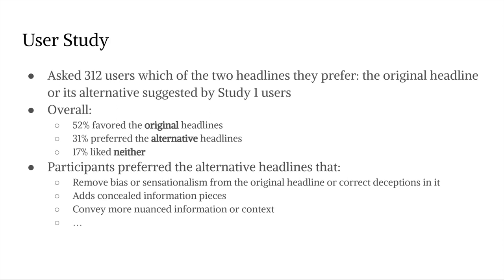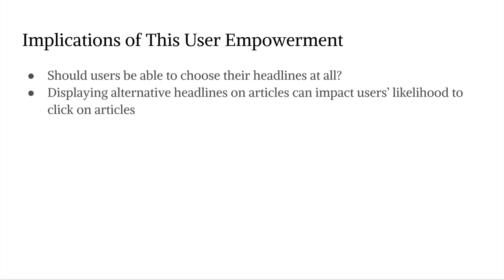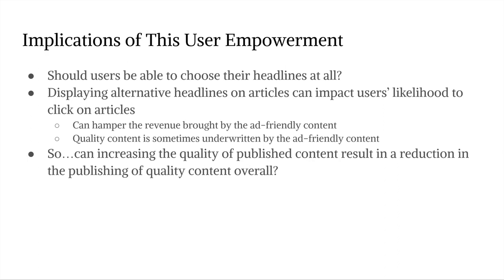In our paper, we discussed insights on the potentials and challenges of the user empowerment that our tool can bring about. For example, we talked about whether users should be able to choose their headlines at all. One issue is that displaying alternative headlines can impact users' likelihood to click on articles, which can hamper the ad revenue that clickbait headlines bring into the journalism industry. The quality content published in news media is sometimes paid for by the ad-friendly content. So if we attempt to remove clickbait headlines, we might end up jeopardizing the publishing of quality content. A serious question is whether increasing headline quality through tools like Re-Headline can result in a reduction in the publishing of quality content overall, and if so, does this mean that problematic headlines should be kept despite users' interest in modifying them?